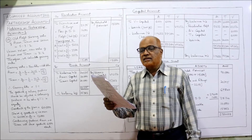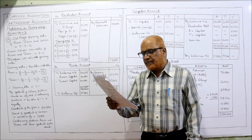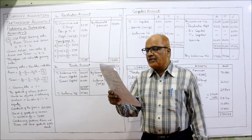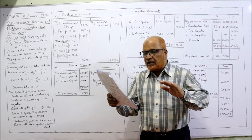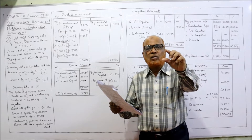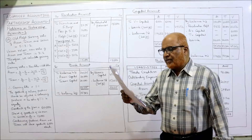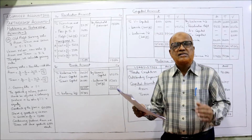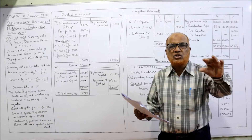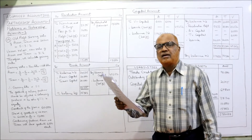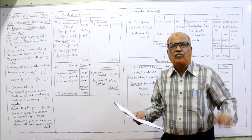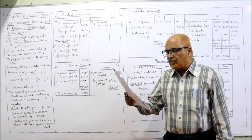The retirement terms are: freehold premises to be increased by 20% — currently valued at 75,000, so we debit freehold premises and credit revaluation account. Furniture and fittings to be depreciated by 10% — we debit revaluation account and credit furniture account. Provision for doubtful debts at 5% on trade debtors to be created — entry is debit revaluation account, credit provision for doubtful debts.